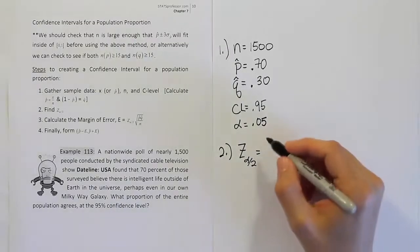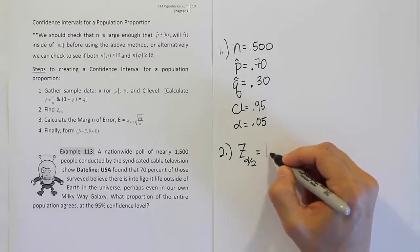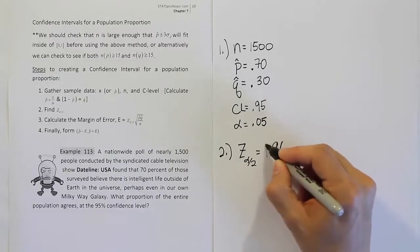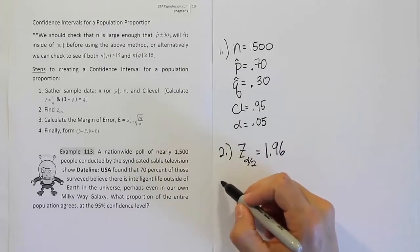Okay, so we found that our z alpha divided by 2 value was 1.96. Let's go to step 3.